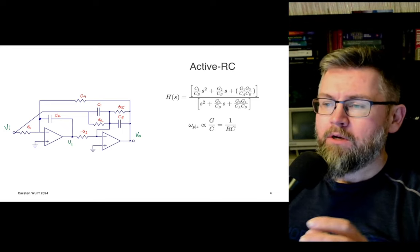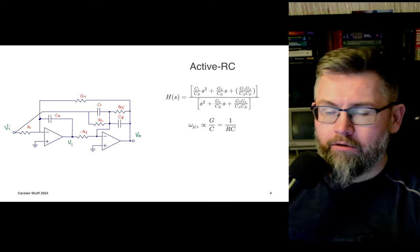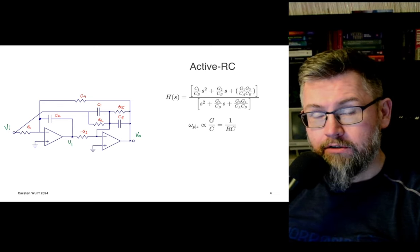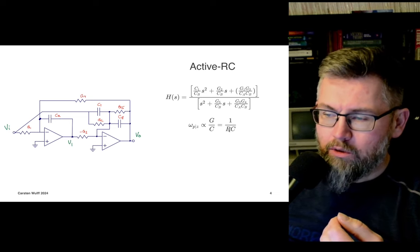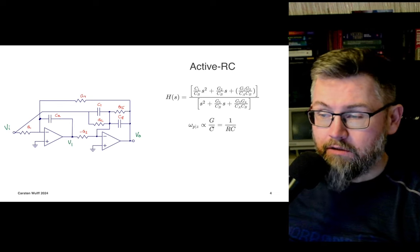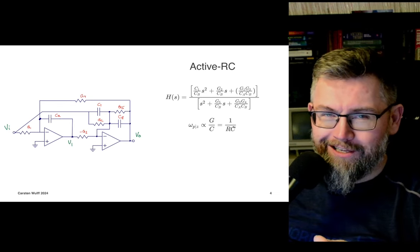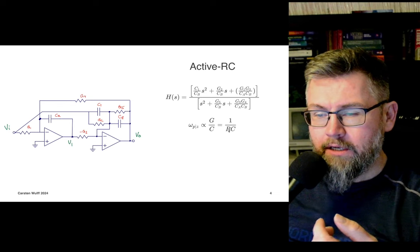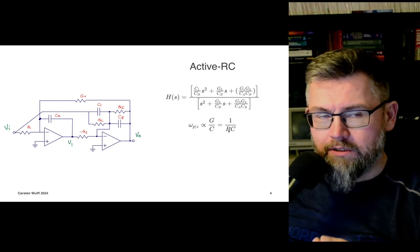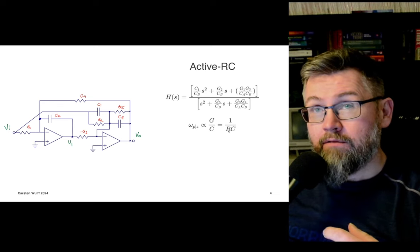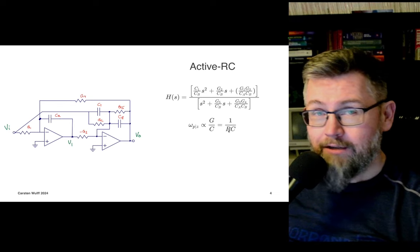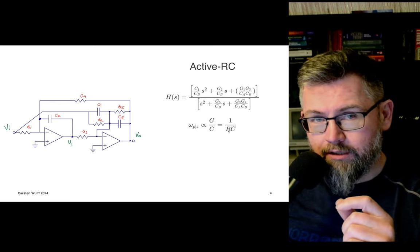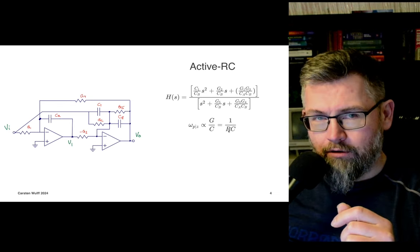We can make filters with either ActiveRC or GMC. In ActiveRC, the pole and zero frequencies will be proportional to the conductance divided by C, or in the real case, 1 over RC. The variation in RC on our chips can actually be quite large — the resistors and capacitors will vary from die to die, from wafer to wafer, and from week to week. Which means that setting an accurate relationship for the pole and zero frequencies is not easy.